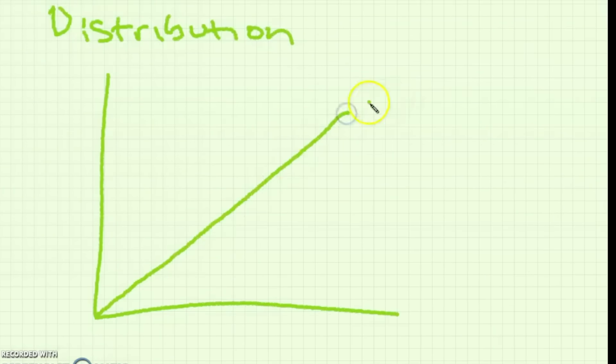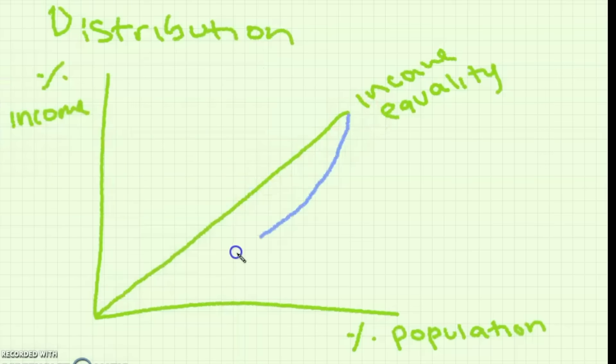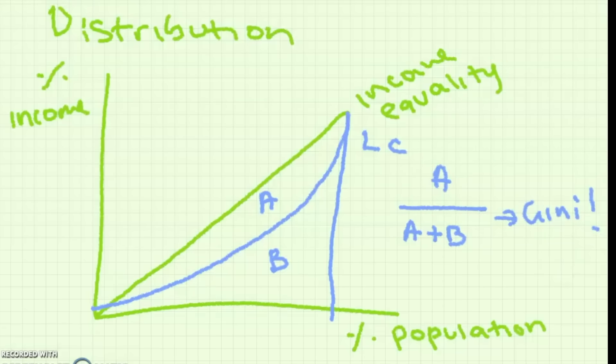If you're asked about income distribution then you use the Lorenz curve. The Lorenz curve plots percentage of population over percentage of income and this line here is the line of perfect equality. So the situation where exactly 20% of the population say earn 20% of the income. However, most countries have a Lorenz curve that is unequal. If you want to calculate the Gini coefficient using the Lorenz curve you simply do A over A plus B.